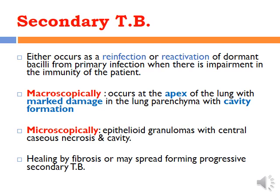Secondary tuberculosis means development of TB in a previously exposed person who has some immunity to tuberculosis. This occurs either by reactivation of dormant viable bacilli present in the primary lesion, or by re-infection from outside. The main lesion usually affects the apices of the lungs with a marked granulomatous reaction and formation of multiple cavities. Microscopically, we see multiple granulomas, caseous necrosis, and cavity formation. Healing is usually by fibrosis.